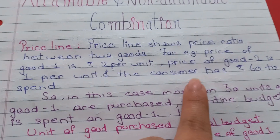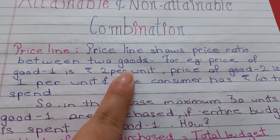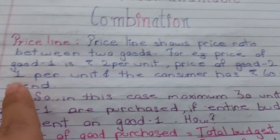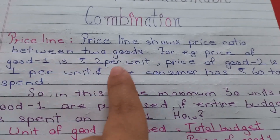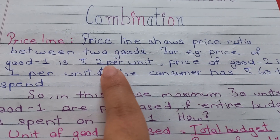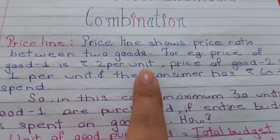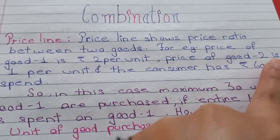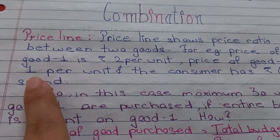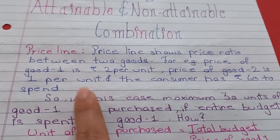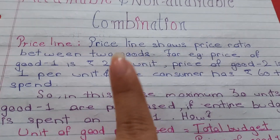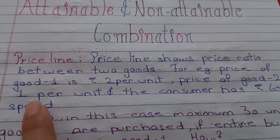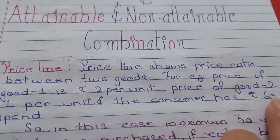For example, price of good one is rupees two per unit. दो रुपए की है — अगर हमने एक unit good one का खरीदना है, तो हमें दो रुपए देने पड़ेंगे. Price of good two is rupees one per unit. The consumer has rupees 60 to spend — इसका total budget 60 rupees है.